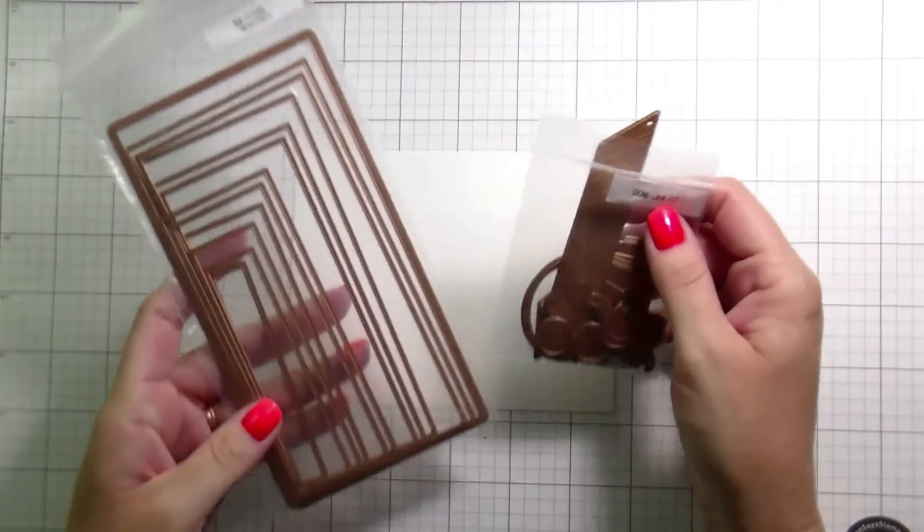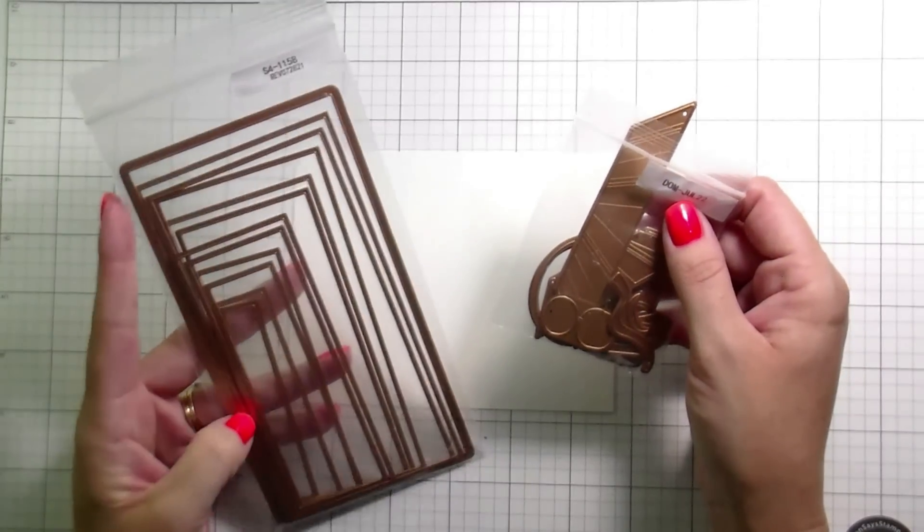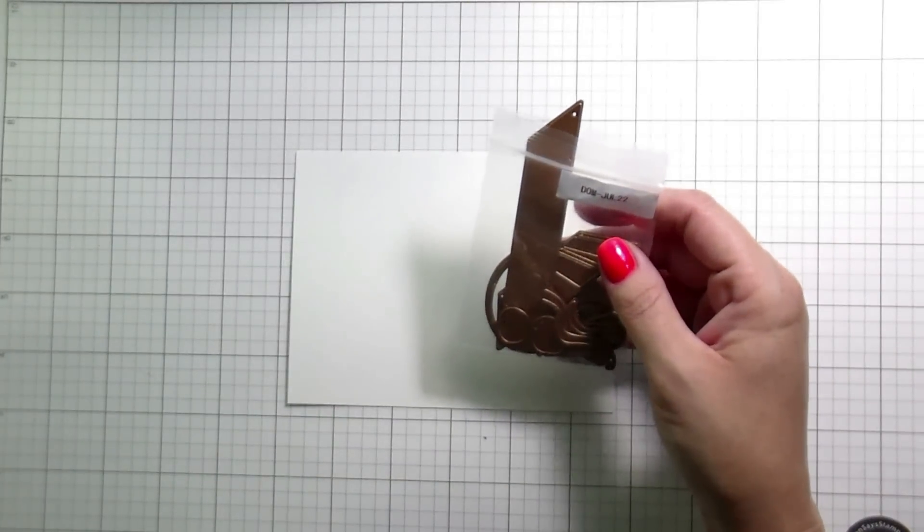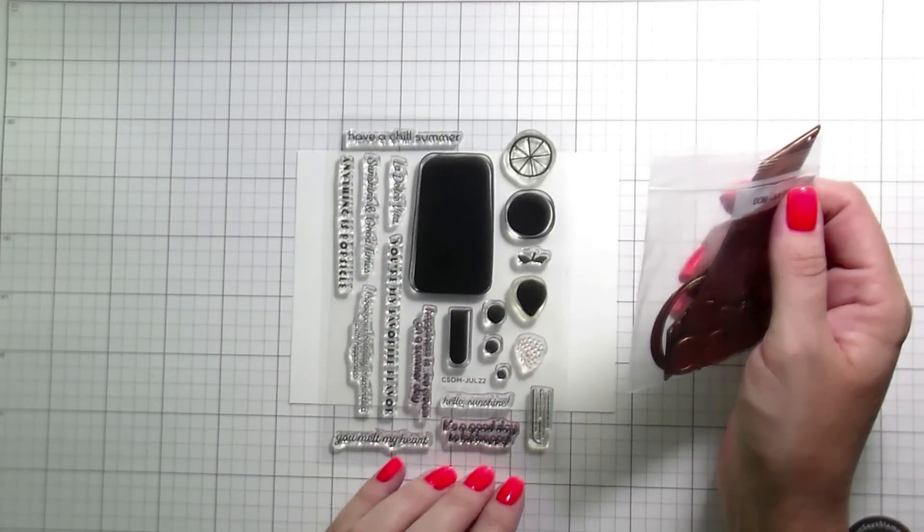Hi guys, it's Kelly here and I'm back with another video. Today's video is going to be featuring the Spellbinders Small Die of the Month Club Kit, and this is actually also for the Spellbinders July Club Kit Blog Hop.